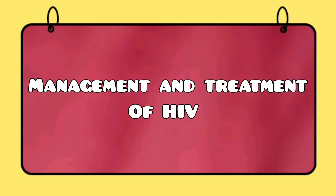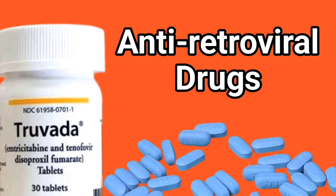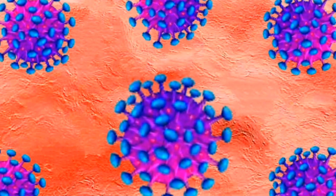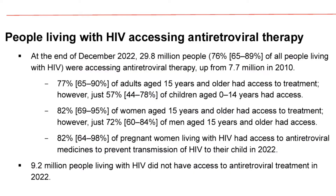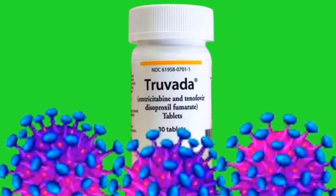The management and treatment of HIV include the following. 1. Administering antiretroviral drugs. These drugs help prevent the replication of HIV, thereby inhibiting the virus from damaging the body and also prevent the infection from progressing into the AIDS stage through the reduction of the viral load in the body. According to UN AIDS statistics, an estimated 29.8 million people living with HIV had access to antiretroviral therapy as at December 2022.